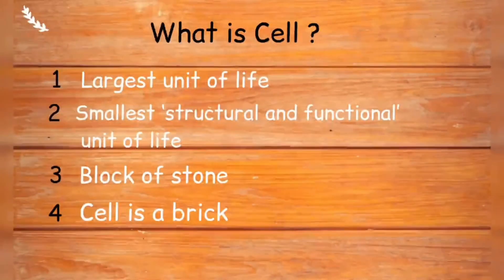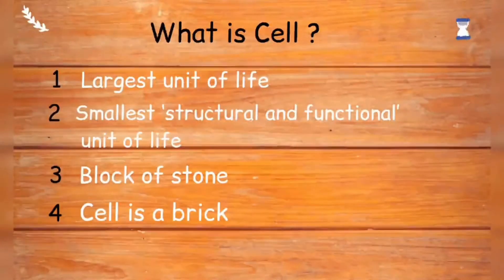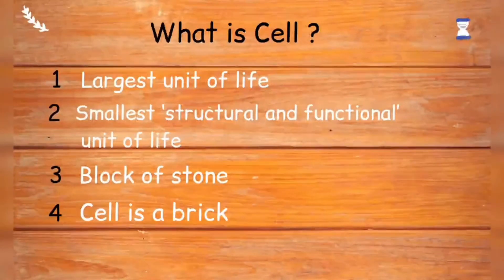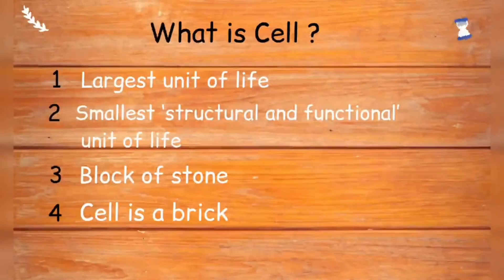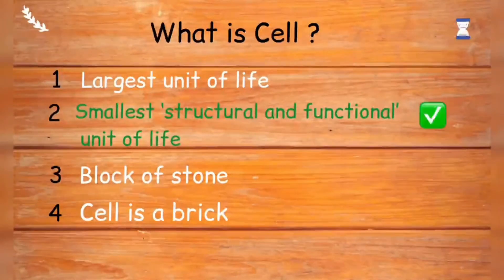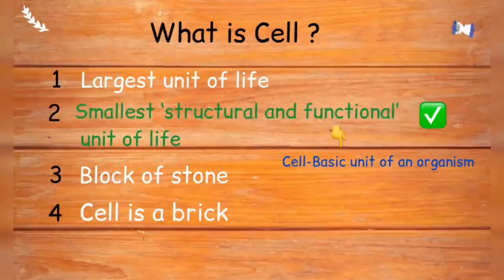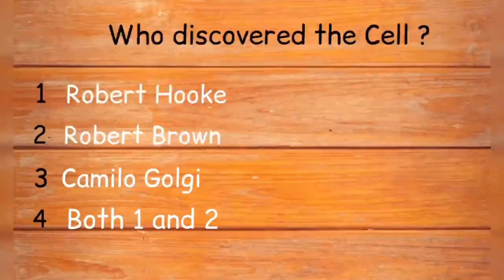What is a cell? Options are: largest unit of life, smallest structural and functional unit of life, block of stone, or cell is a brick. Just like a building is made up of many bricks and a brick is the smallest unit of a building, similarly all living organisms are made up of cells. Cell is the smallest structural and functional unit of life. You can also say cell is a basic living unit of an organism. The correct answer is option two.